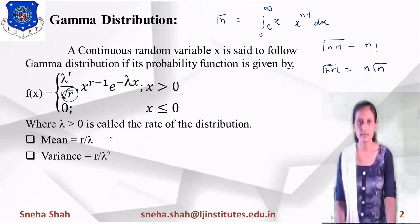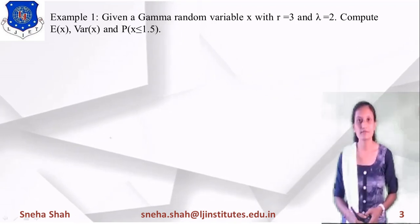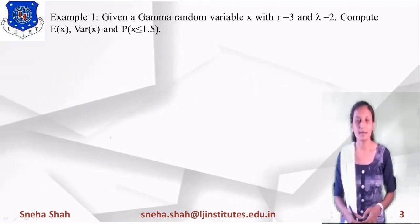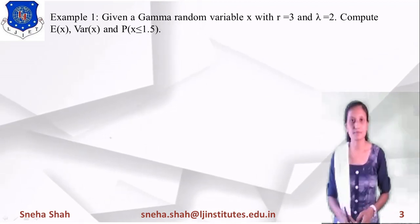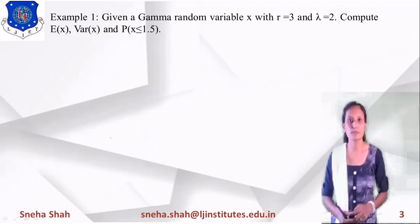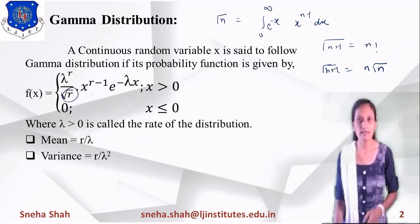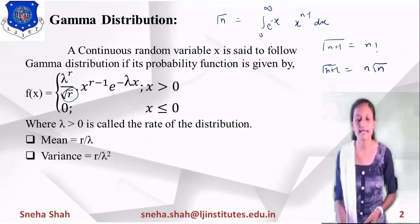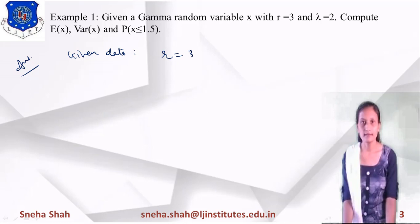Gamma distribution can be well understood through examples. The first example: given a gamma random variable x with r = 3 and λ = 2, compute E(x) — the mean value — variance of x, and find the probability P(X ≤ 1.5). To solve this we will use the gamma PDF equation. Given data: r = 3 and λ = 2.